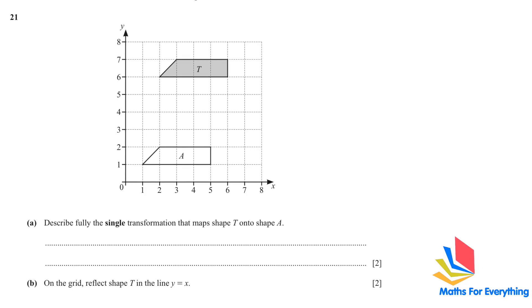Question number 21 is a transformation question. The first part describes fully single transformation that maps shape T onto shape A. We can see that they are the same sizes. The shape has been shifted. So, when there is a shift in the shape, that means it's a translation.